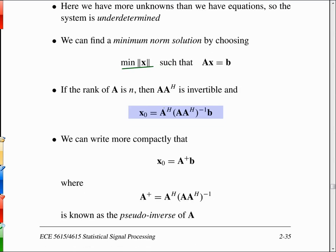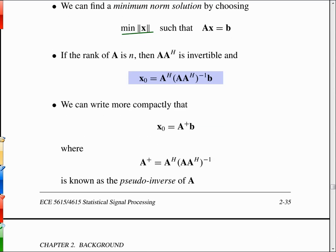Or more compactly, you can say that A plus is the matrix that has to multiply times B to get the solution and that's this thing called the pseudo-inverse of A, which is formed as given right here.